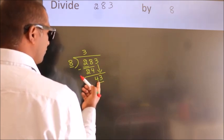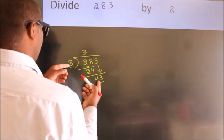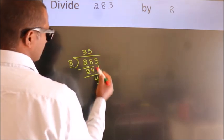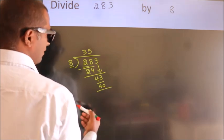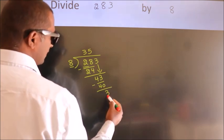A number close to 43 in 8 table is 8 fives, 40. Now we subtract. We get 3.